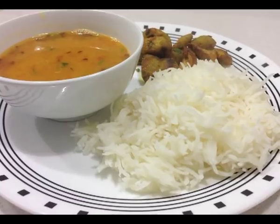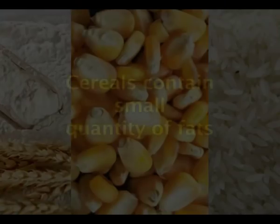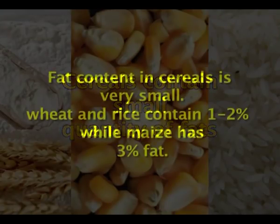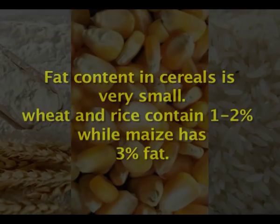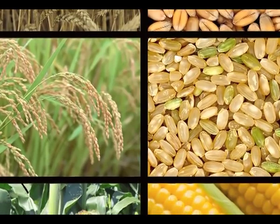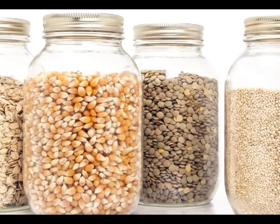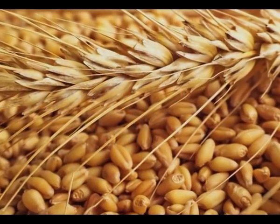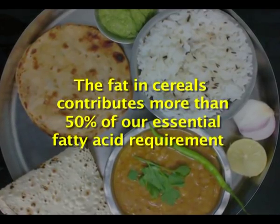Therefore, cereals and pulses when combined together complement the deficiencies in each other and form a complete protein — this is the supplementary value of cereal grains with pulse protein. Cereals contain a small quantity of fat, only 1 to 2 percent in wheat and rice and 3 percent in maize. Most of the fat in the cereal grain is present in the germ and in the bran. Wheat germ contains about 6 to 11 percent fat. The fat in cereals contributes more than 50 percent of our requirements of essential fatty acids — therefore, it is a good fat.